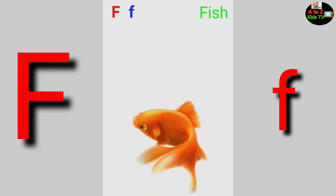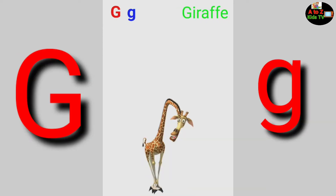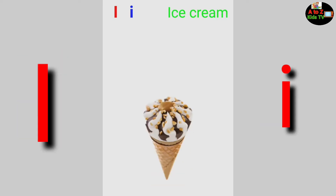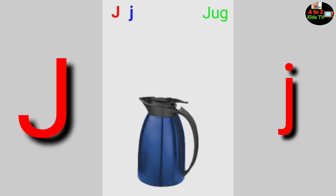F for Fish, G for Giraffe, H for Horse, I for Ice Cream, J for Jug.